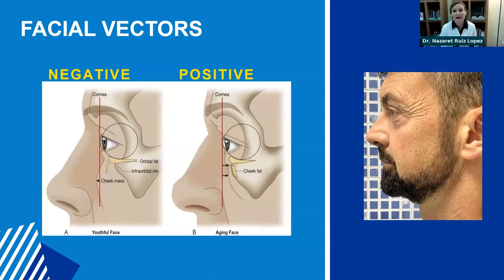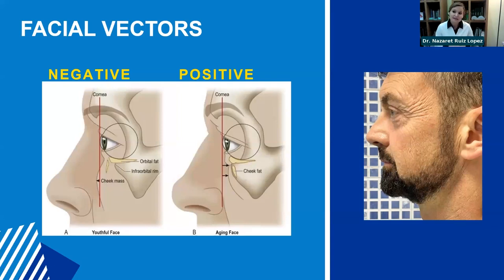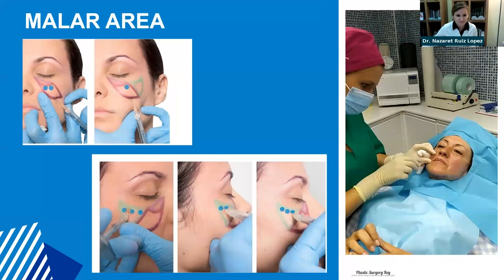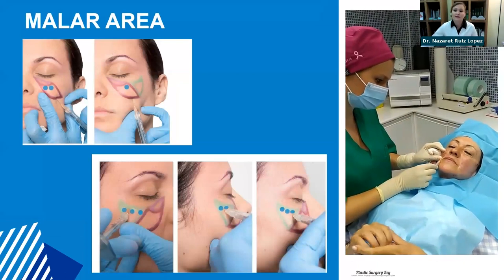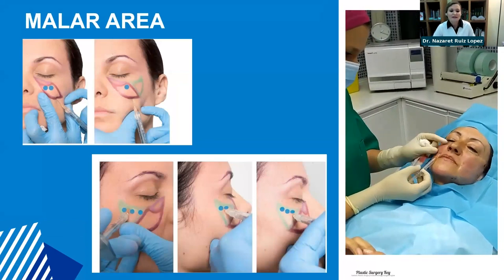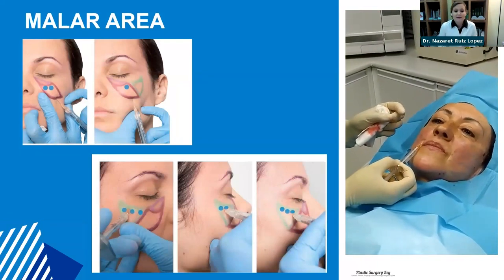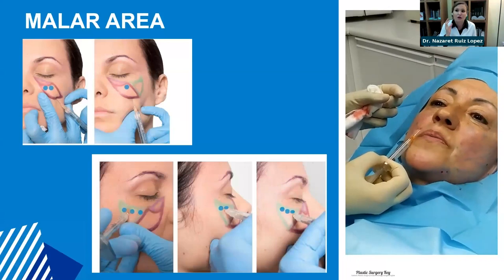Every woman wants a malar-zygomatic area like a supermodel. Beyond aging, there is the concept of positive versus negative midface vectors. A negative vector means the malar bone sits behind the line of the eye — all eye structures project in front of the malar bone, creating more under-eye bags and more prominent tear troughs. With positive vectors, this is not the case, and those individuals age more gracefully. You can see in an example of a man with a negative vector how the eye appears to project in front of the malar and the lower eyelid appearance is compromised.